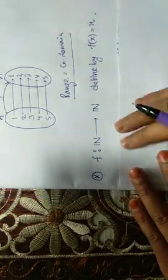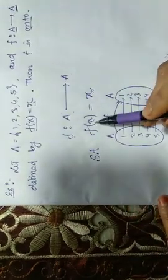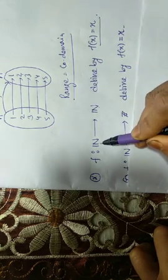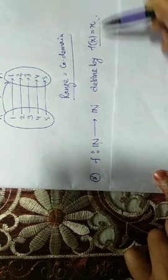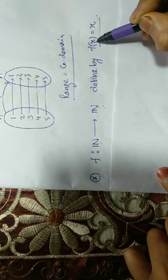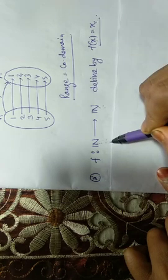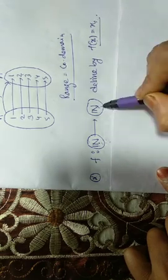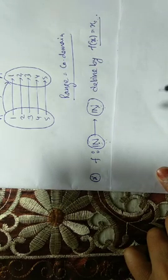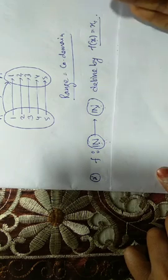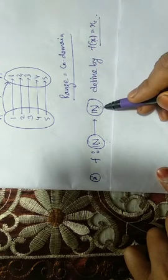So let us consider another example. Here also function is defined. If the function is from natural number to natural number, f of x equal to x. One maps to 1, two maps to 2, three maps to 3, four maps to 4. Because both sets are natural numbers and function is defined as x maps to x. For any element we consider, the image exists. Hence this function is onto.